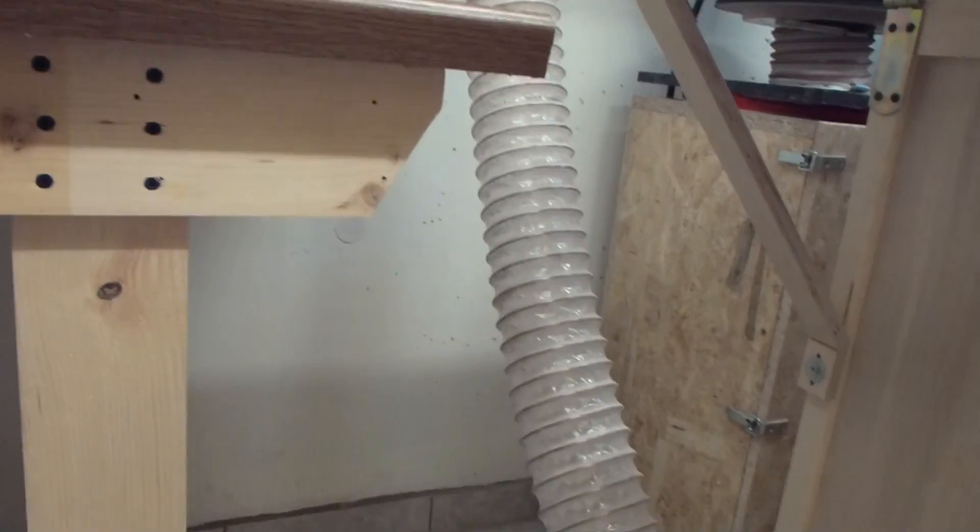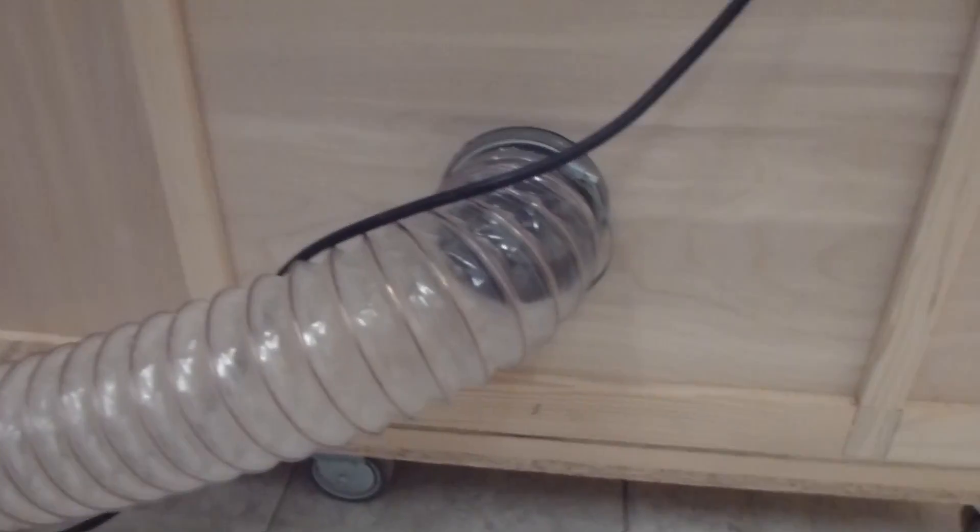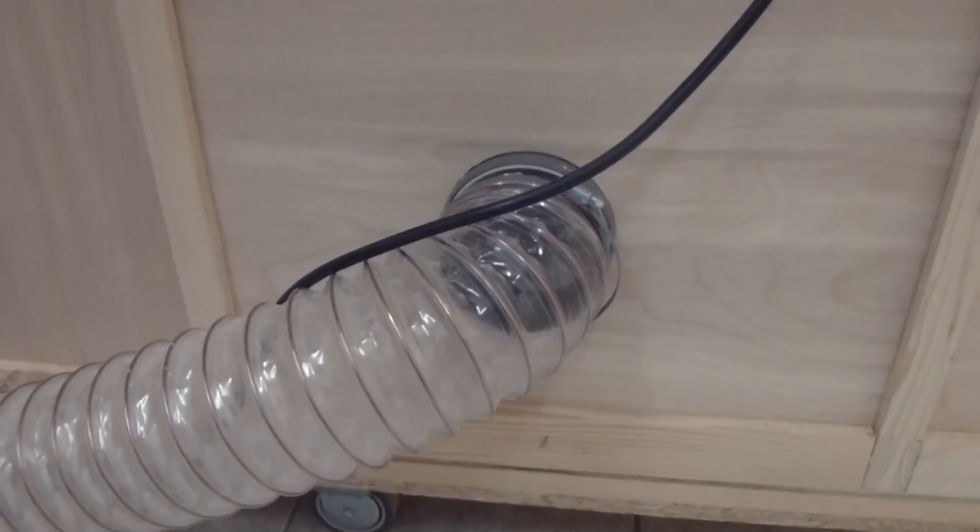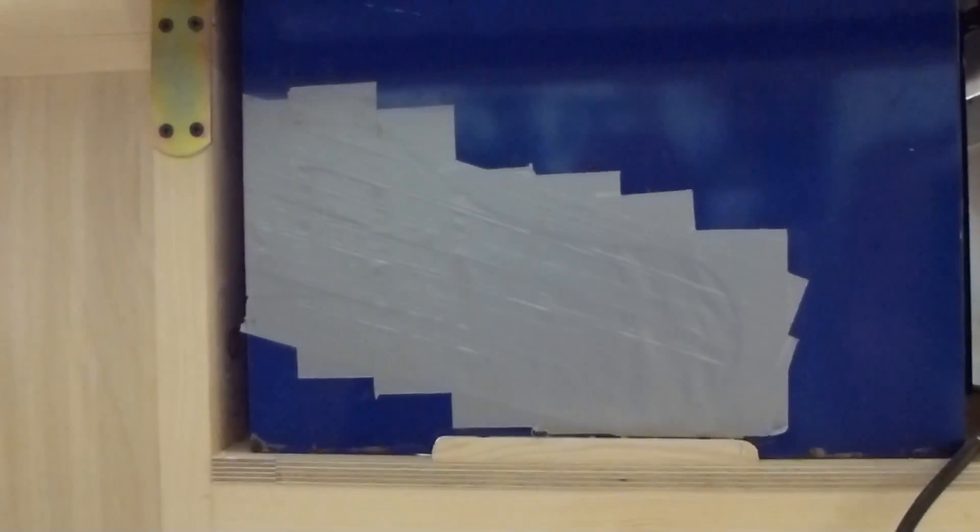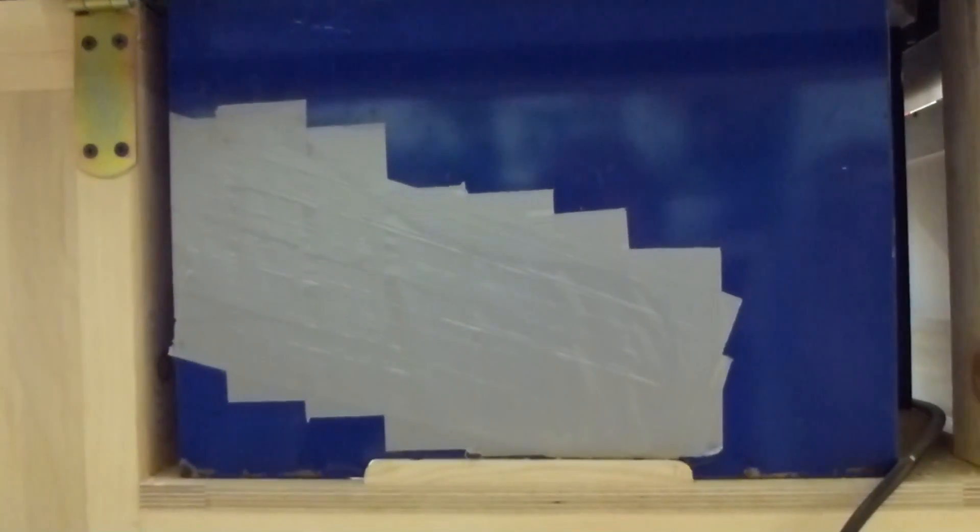The dust collection for the table saw was right with the four inch hose, or hundred millimeter hose, down here. The original dust collection spot from this 18 year old saw was just too bad.